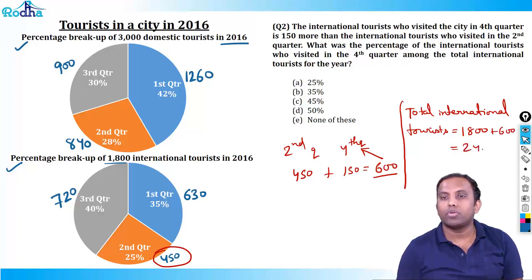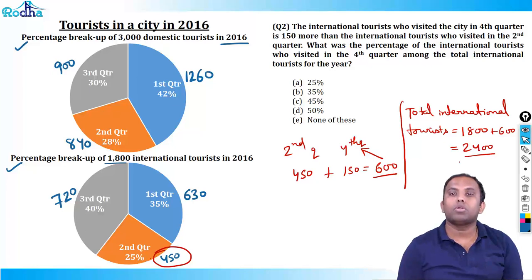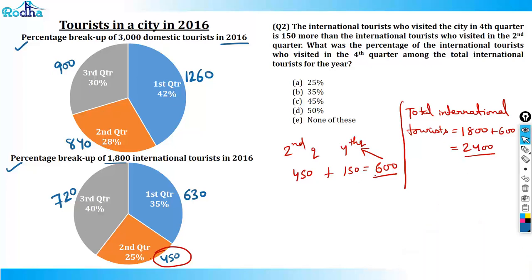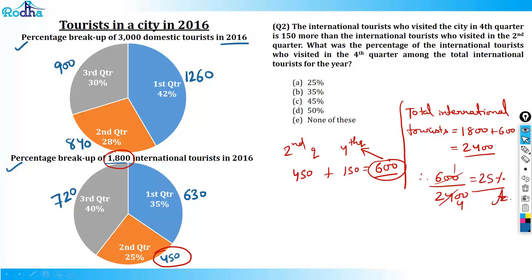Don't make the mistake of calculating 600 out of 1800 — we need to take it out of the total. So fourth quarter is 600 and the rest of the three quarters is 1800, making total 2400. Required percentage is 600 by 2400, that is 1 by 4, that is 25%. That is the answer.